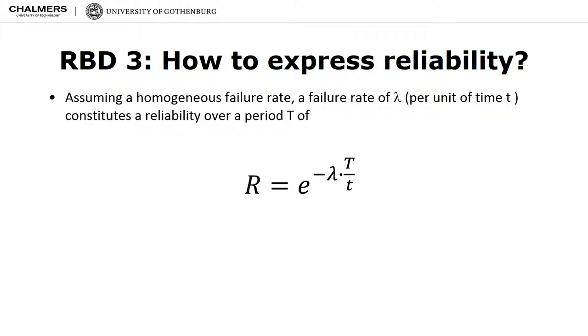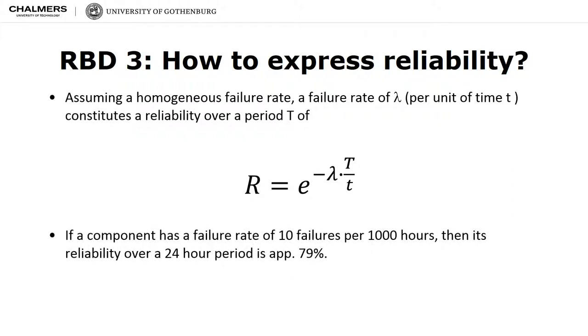From a component's failure rate lambda, we can derive the reliability of that component over a period of time t using the equation on this slide. For example, if a component is estimated to have a failure rate of 10 failures per 1000 hours, then its reliability over a 24 hour period is calculated to be approximately 79%. Try if you can repeat this calculation for yourself.